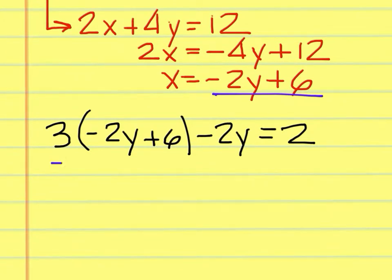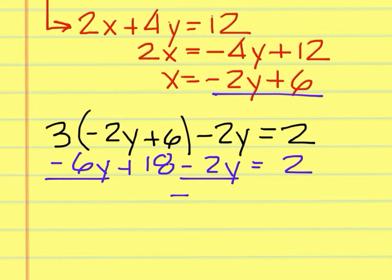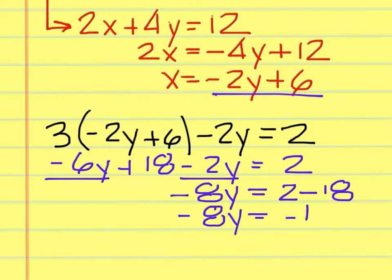Distribute to get negative 6y plus 18 minus 2y equals 2. Negative 6y, negative 2y is negative 8y. And move that plus 18 to the right. Make it minus 18. This leaves me with negative 8y equals negative 16.